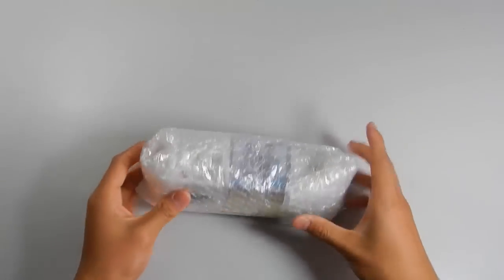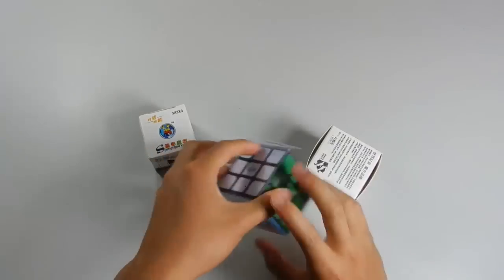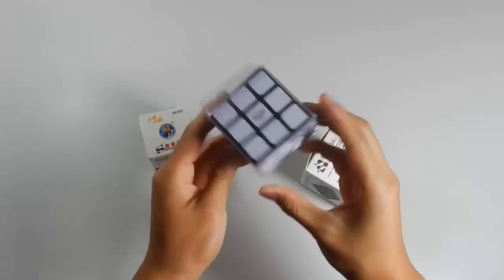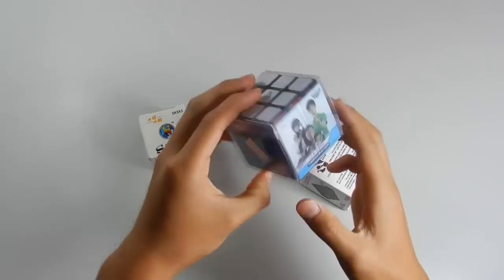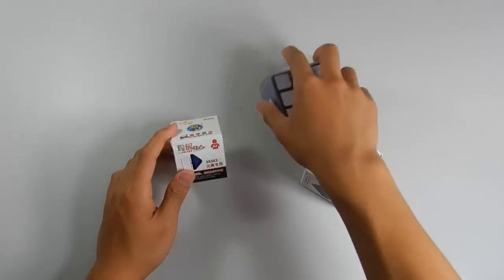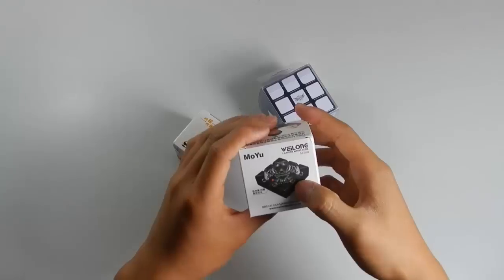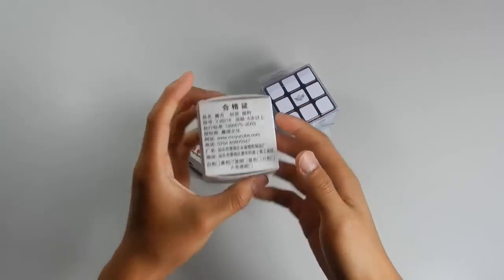So let's put that to the side. Oh okay, they sent me three cubes, not two. Oh, that's interesting. I see now, I didn't even ask for this, it's a surprise. So thank you for that. So this is the Cyclone Boys 56 millimeter in black, I believe. This is the Shang Shao mini 2x2, and this is the mini Wei Long version 2, 54.5 millimeter.